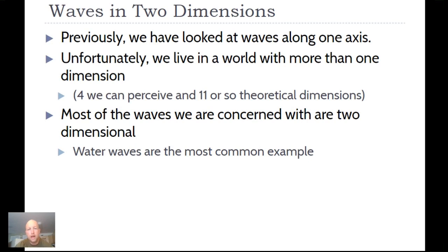We previously looked at waves along one axis, but we live in a world with more than one dimension. You can have your x and y axes as seen in a normal graph. If you continue to take math at a deeper level you'll look at the z axis, which is easy to see in 3D objects. The fourth dimension becomes time, and apparently there are upwards of 11 or 12 theoretical dimensions.